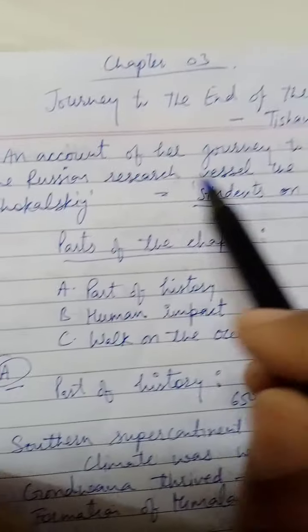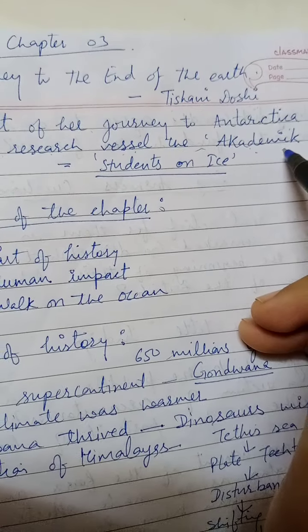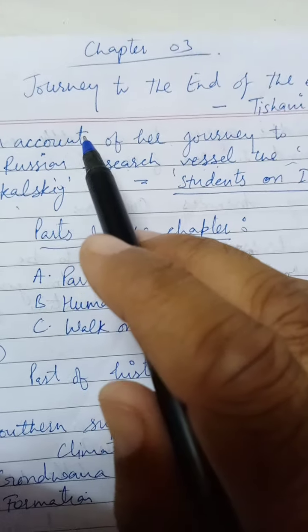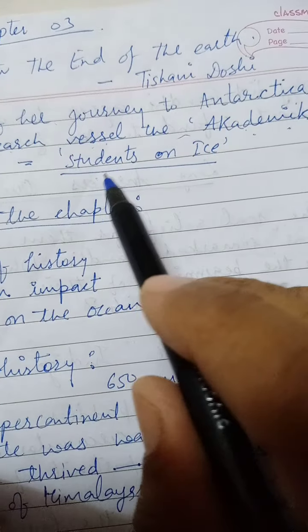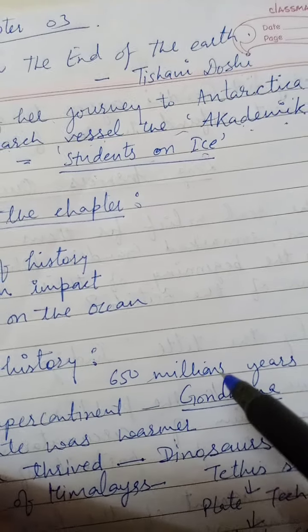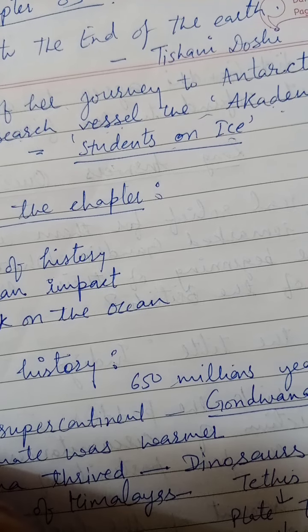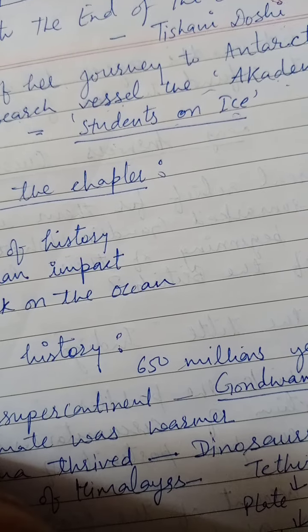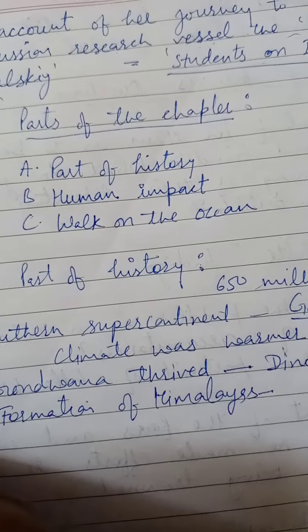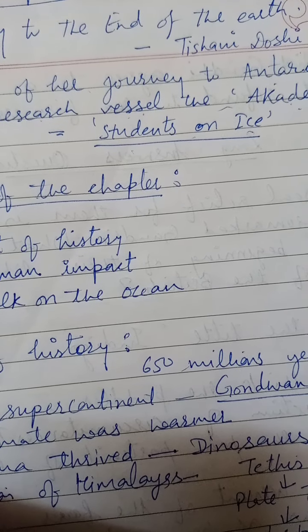This chapter is basically an account of Ishani Doshi's journey to Antarctica on the Russian research vessel named Academic Shokalskiy. Out of all the projects, 'Students on Ice' is the most suitable title for this project. This particular piece of writing has been prescribed in the NCERT book just to make students aware regarding environmental degradation. You will also get to know about Antarctica, the continent mostly known for its ice.